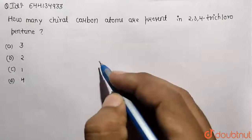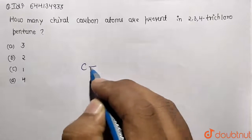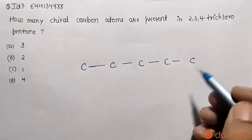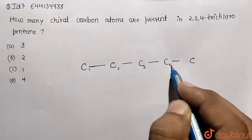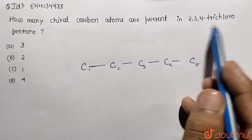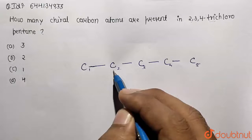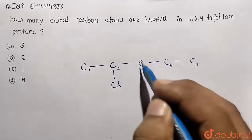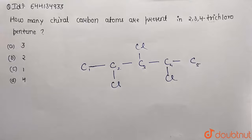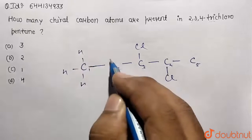Let's draw the structure. I am taking a pentane chain: carbon 1, carbon 2, carbon 3, carbon 4, and carbon 5. Now, we place the chloro groups — there are three chlorines at positions 2, 3, and 4 respectively. The remaining valencies are satisfied using hydrogen, since carbon has tetravalency.